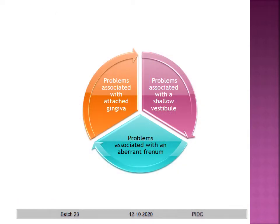We have three problems as mentioned: problems associated with the attached gingiva, problems associated with the shallow vestibule, and problems associated with an aberrant frenulum. We will see each of these.